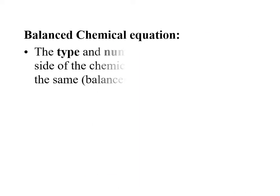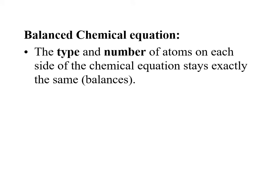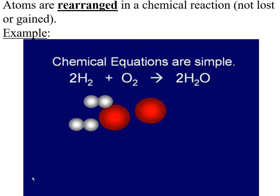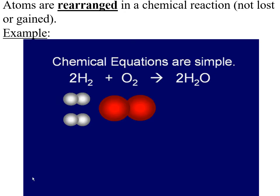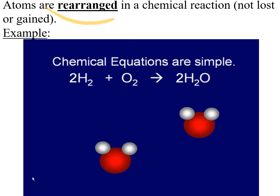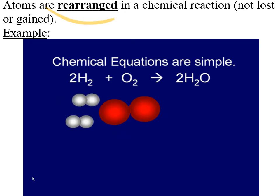For the balanced chemical equation, we need to make sure that the type and number of atoms on each side stays exactly the same. We're not creating any atoms throughout the reaction; we're not destroying any atoms. They all have to be accounted for — what you start with, you have to end with.